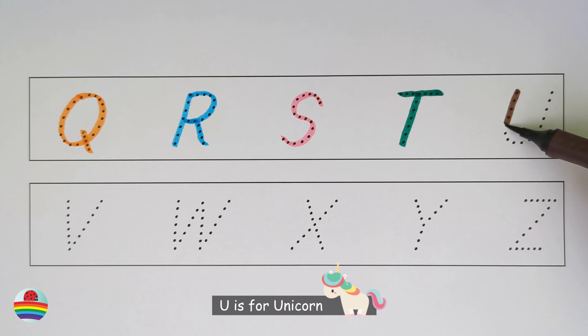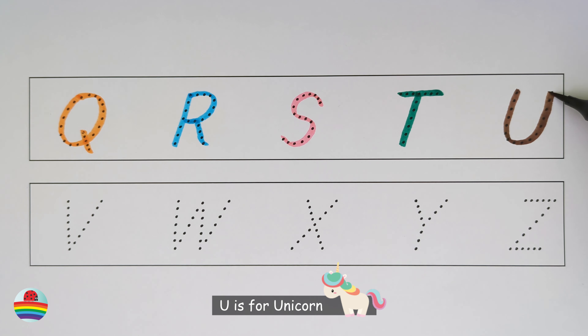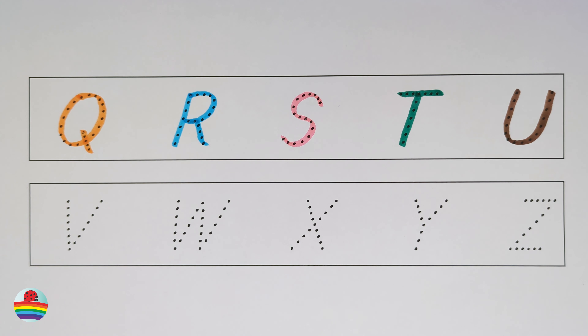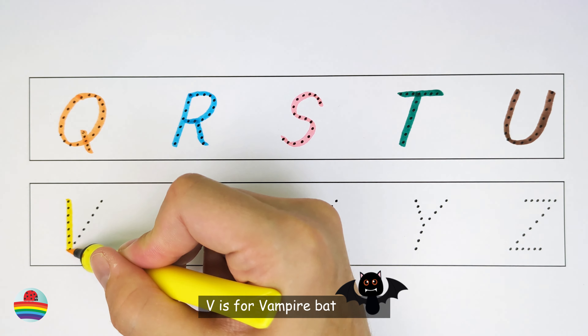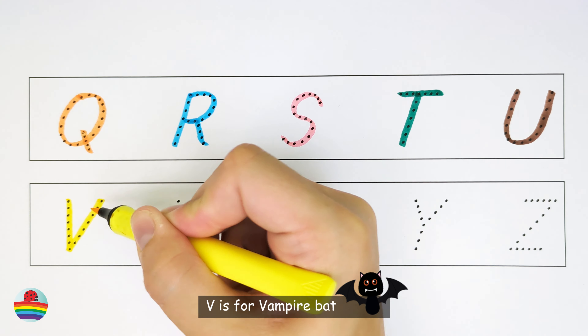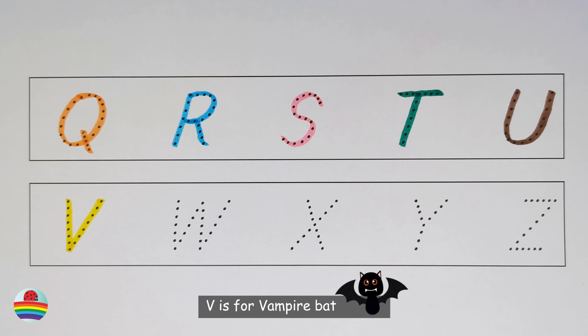U. U is for unicorn. U. V. V is for vampire bat. V.